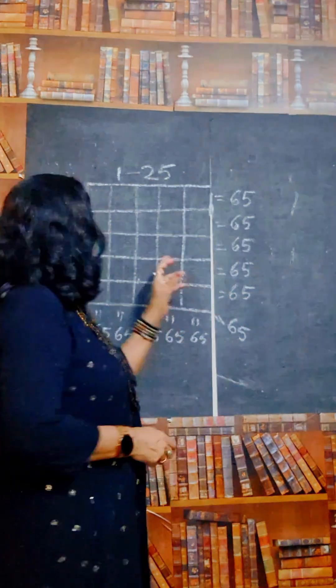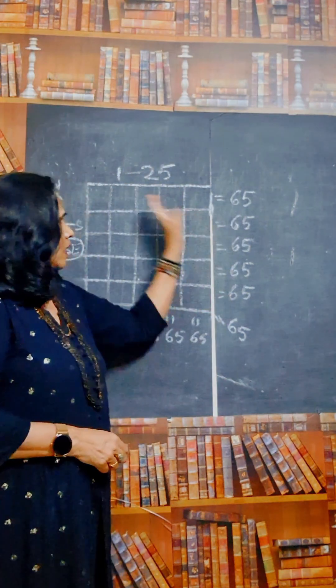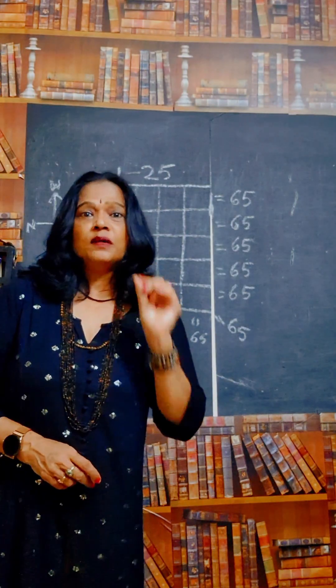See how to draw these magical squares. The numbers should be 1 to 25, and if you add horizontal, vertical, or diagonal, you have to get the number 65.